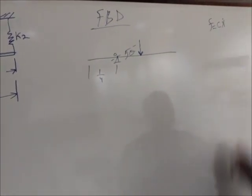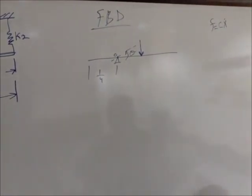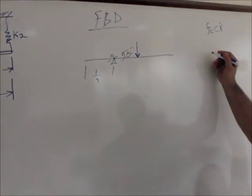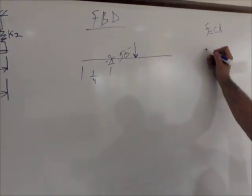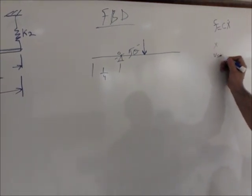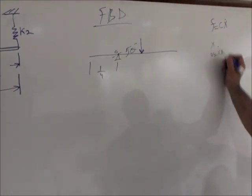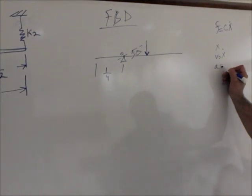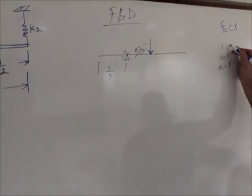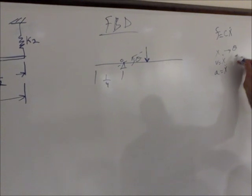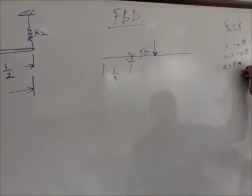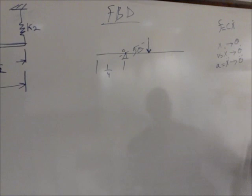The damping force is F equals C, the damping constant, times the velocity. We'll put it in terms of X-dot. The displacement is X, the velocity is X-dot, and the acceleration is X-double-dot. Similarly, in terms of theta, this becomes theta-dot, and the acceleration is theta-double-dot.